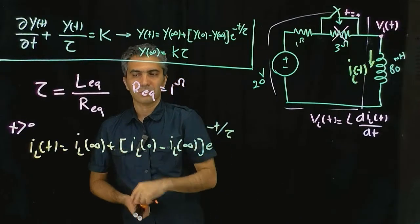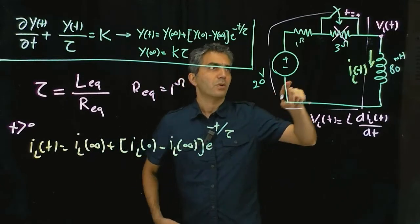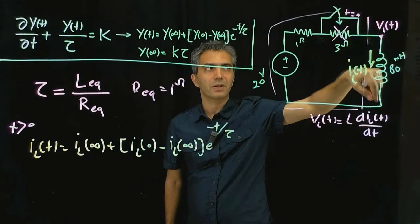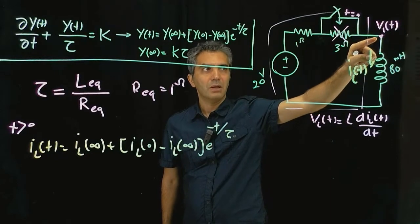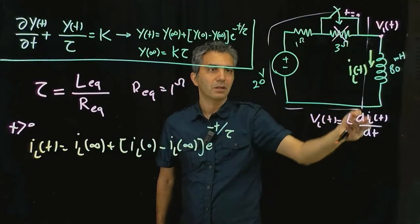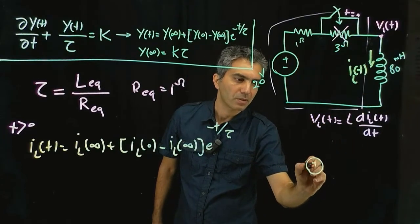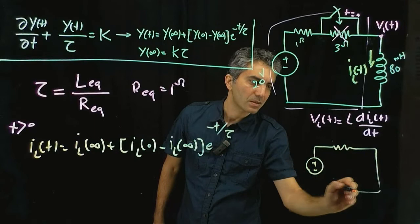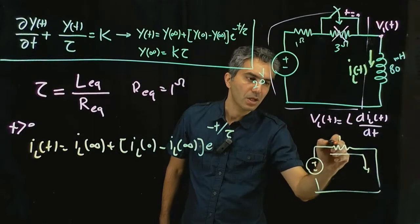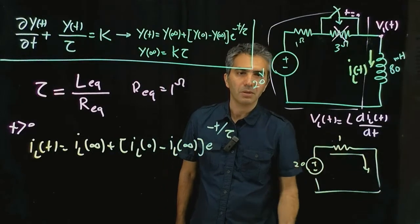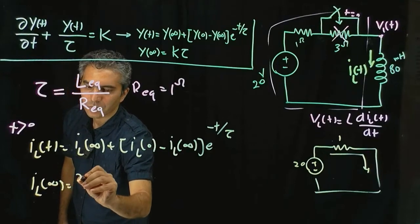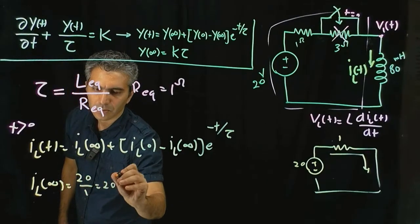At infinity, everything is settled down and the inductor is a short circuit — its voltage is 0. The circuit left is just the 20 V source, the 1 ohm resistor, and ground. So I_L(∞) = 20/1 = 20 amperes.